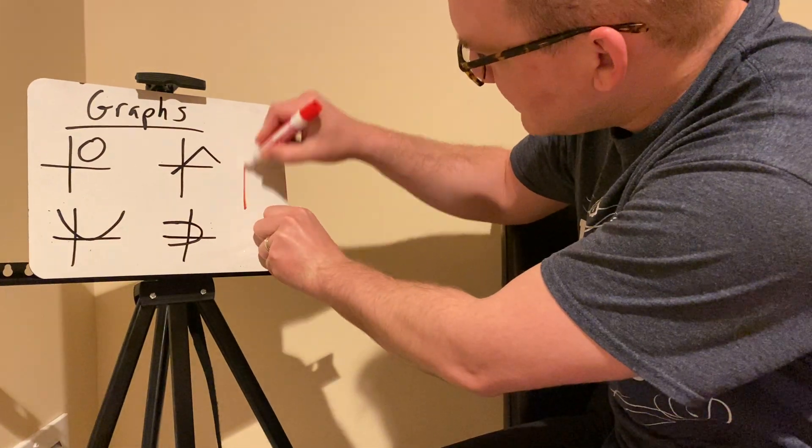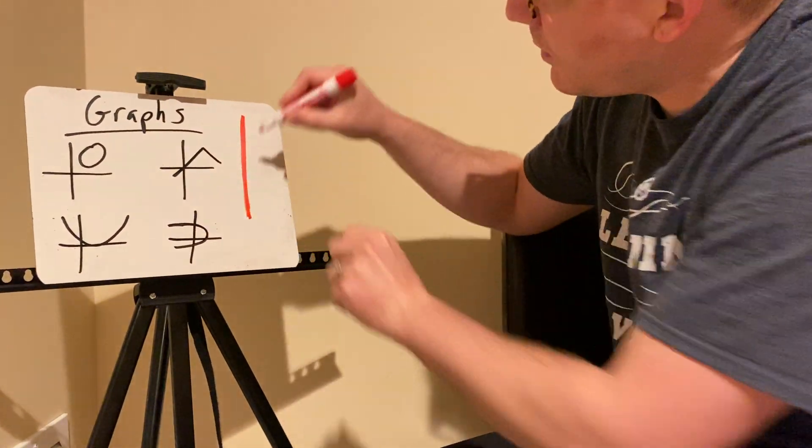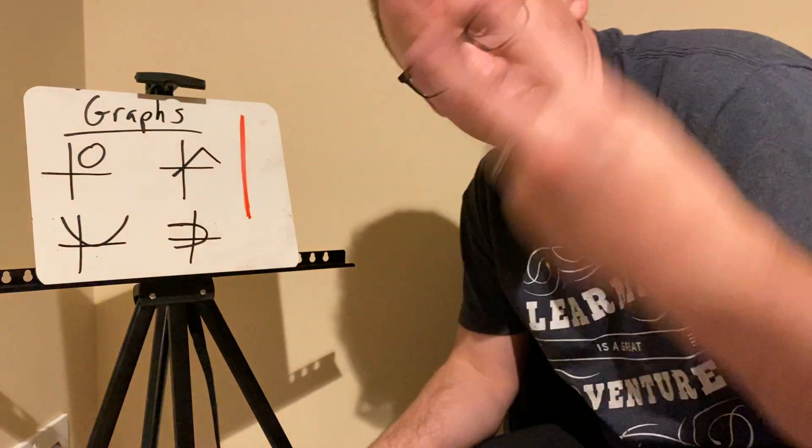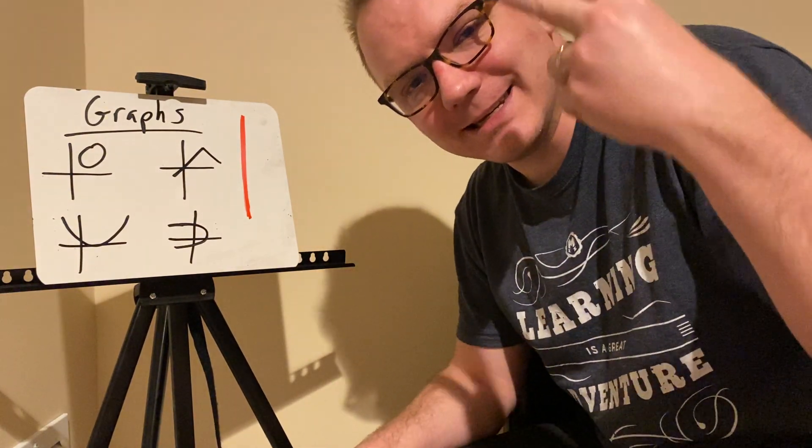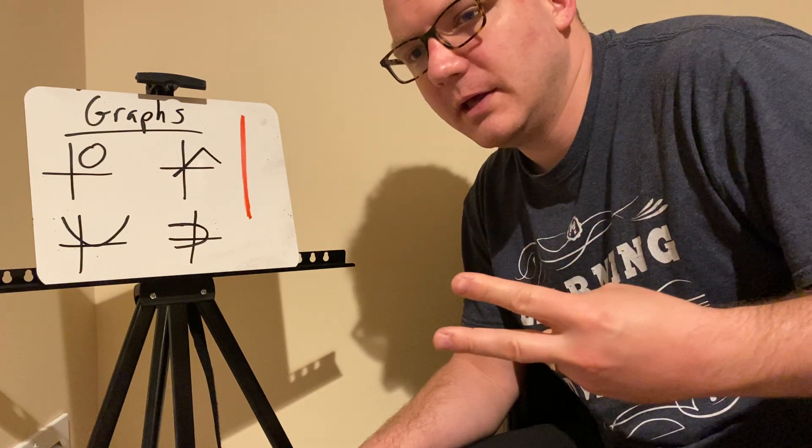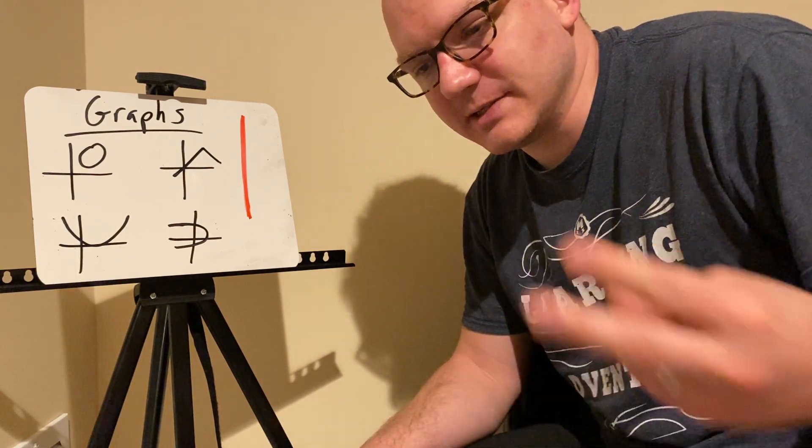We take a vertical line, and if at any point on the function, a vertical line passes through the function twice, it is not a function. If any point on the graph, the vertical line passes through twice, it's not a function. If it only goes through once, it is a function.